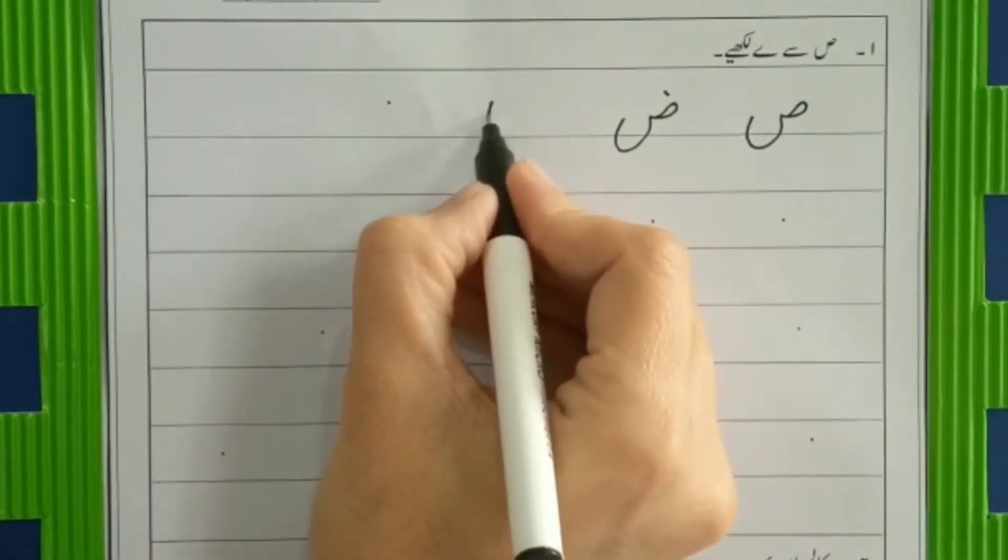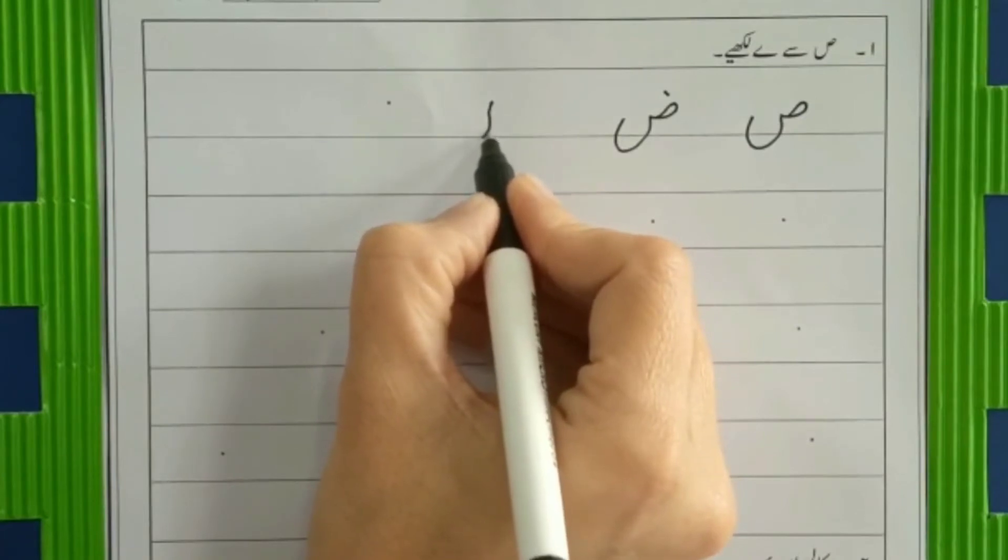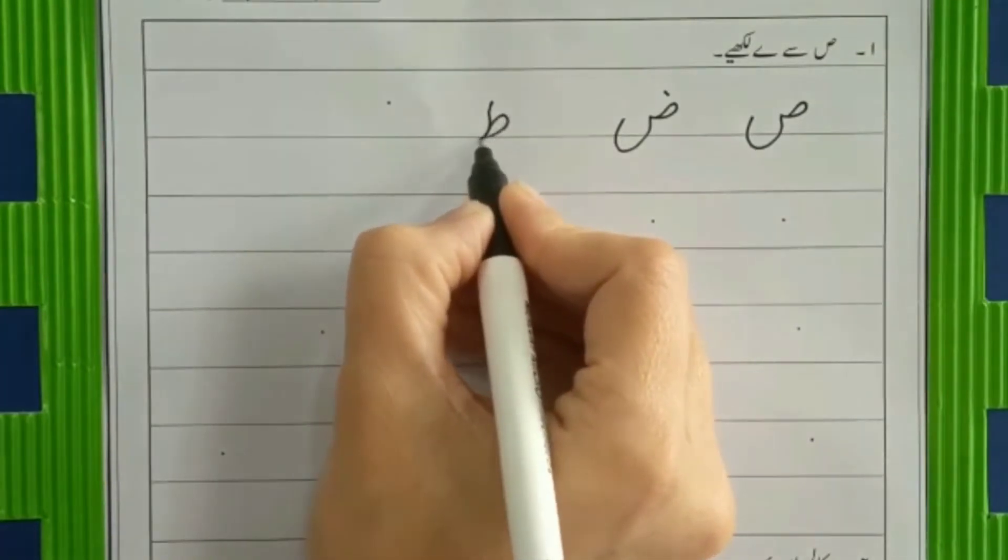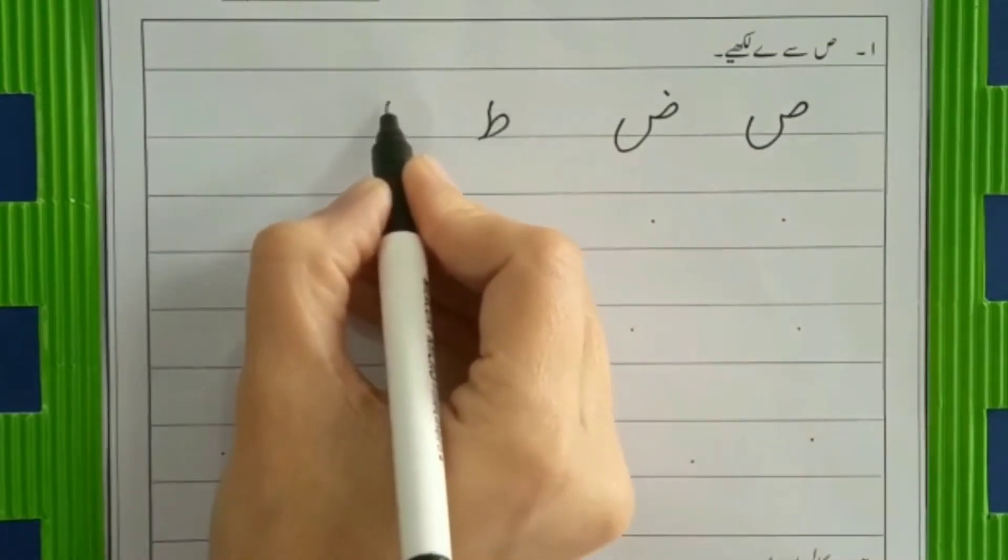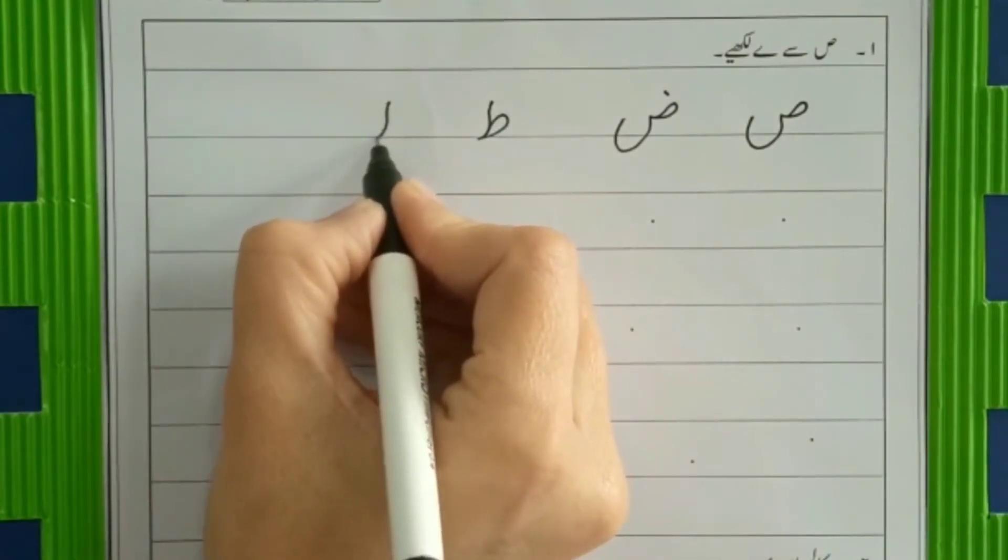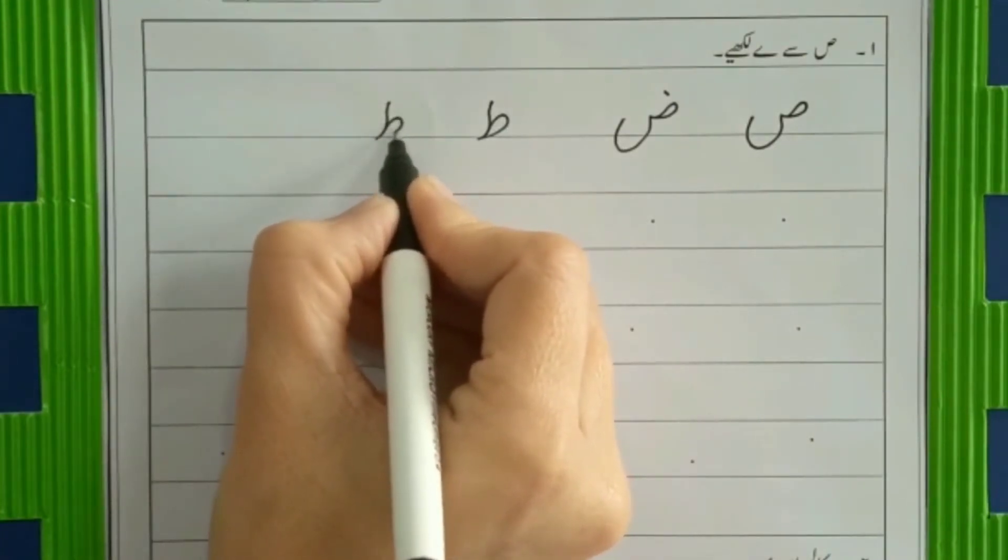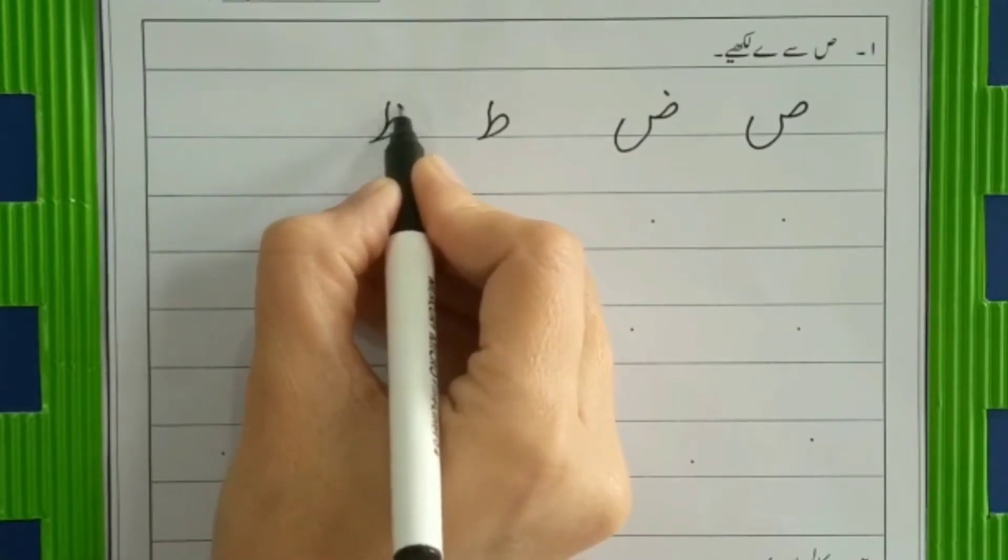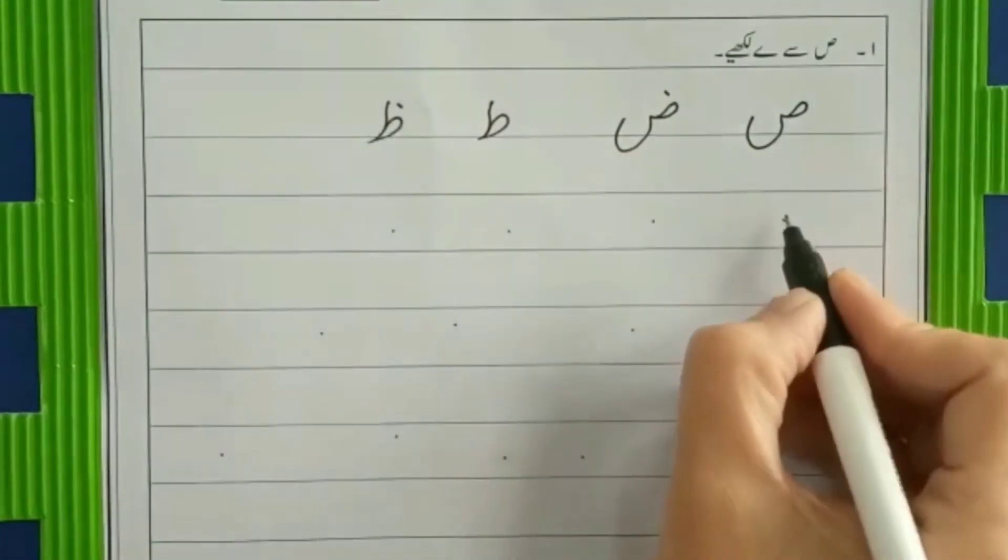Make a curvy alif and make its eye. Toi. Then zoi. You are right. Same formation with one dot. Now toi, zoi. Aen hai.